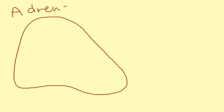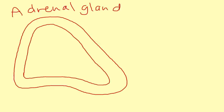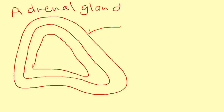I'm going to draw a diagram of the adrenal gland, because a lot of what we talk about has to do with the adrenal gland. This is a cross section, as if I had taken the adrenal gland and sliced it in half, and I'm going to label each part and tell you what each part releases.